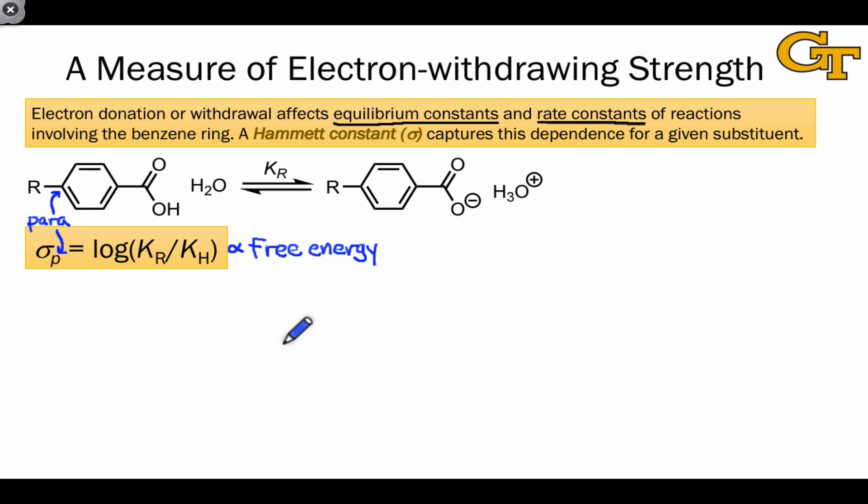Now, let's think about how donating and withdrawing groups will affect the value of K sub R here. Donating groups are going to tend to destabilize the anion since they'll be shoving electron density into the ring, which is already electron-rich due to this negatively charged carboxylate anion group. This will tend to push this reaction back toward reactants, making K sub R smaller, and making the logarithm of K sub R divided by K sub H less than 0. In other words, sigma-P will be less than 0 for a donating R group.